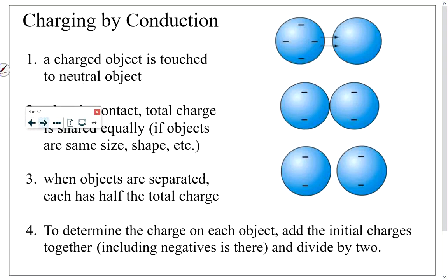When you charge by conduction, assuming the two objects are the same type of material and shape and size, after you touch the charged object to the neutral object and separate them, they will have the same charge — not only the same amount of charge, but the same type of charge. Everything said about the amount and type of charge in friction and conduction can be justified using the law of conservation of charge.